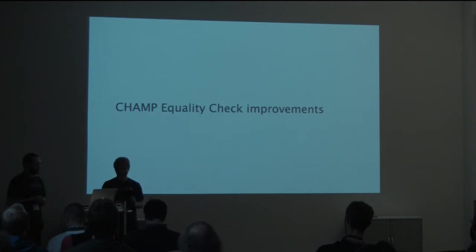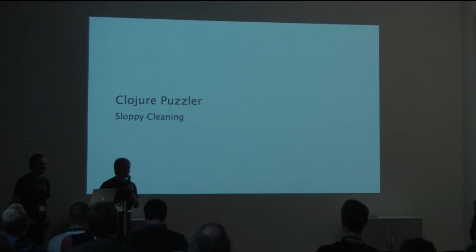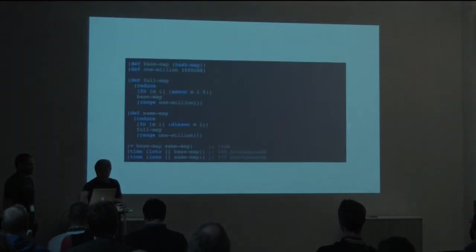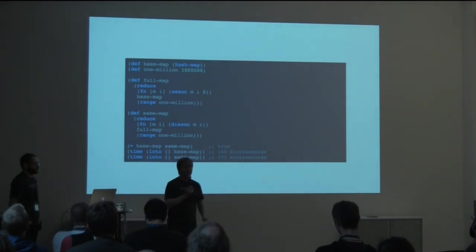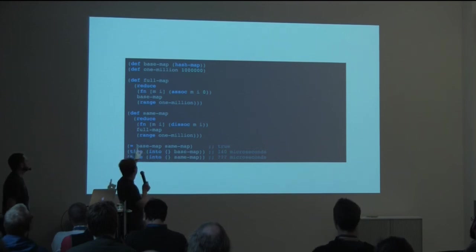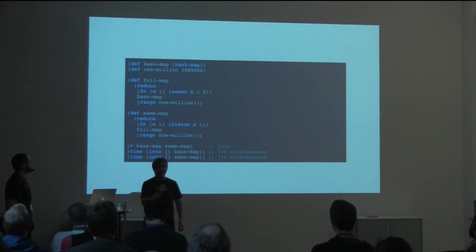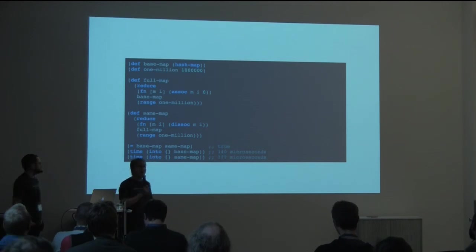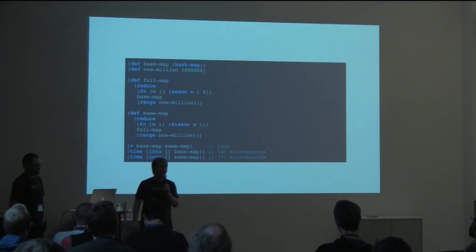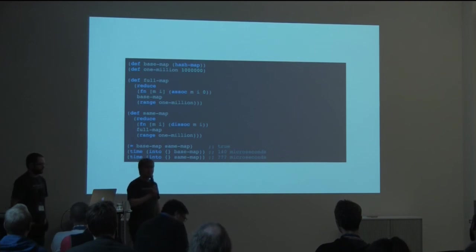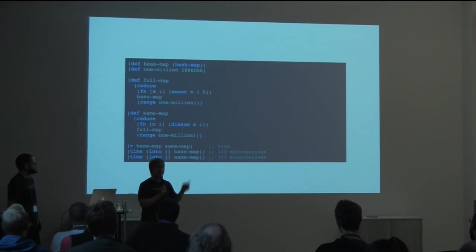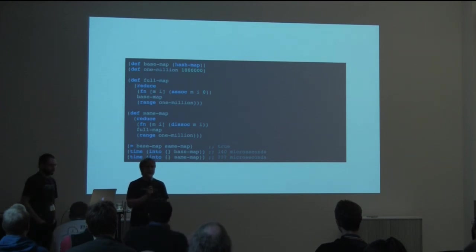And now we're going to move on to talk about the improvements for equality checks of hash maps. And we have audience participation here. We have a Clojure puzzler that I like to call sloppy team. And so in this code example, we start out with an empty hash map. We add one million key-value pairs in full map, and then we remove all the key-value pairs from full map, getting back to same map, and then we compare the two empty hash maps, and they are equal according to Clojure. And so that's the question we pose to you in the audience: if we want to do the operation of putting all the key values of our maps into an empty hash map for the base map that is 140 microseconds, the question that we have is how long will it take in the same map which has exactly the same number of key-value pairs as an empty hash map?